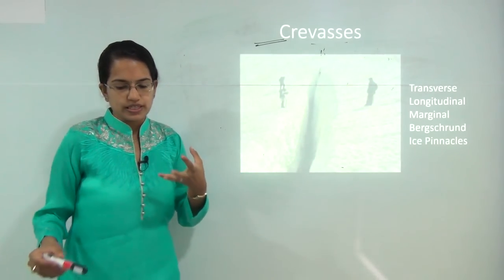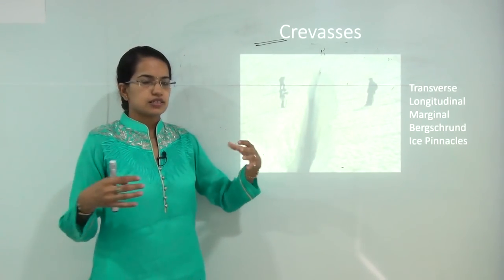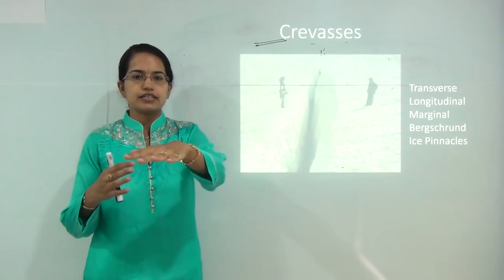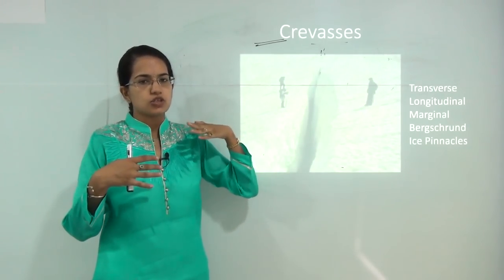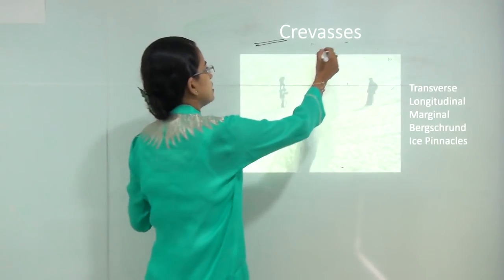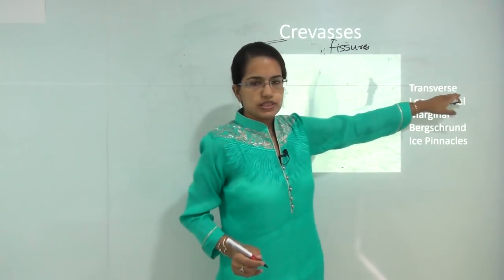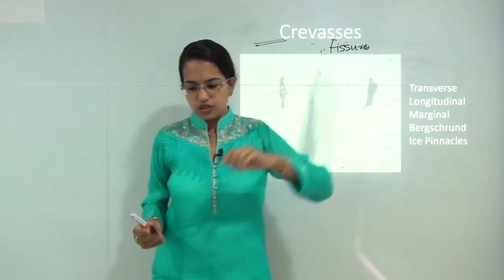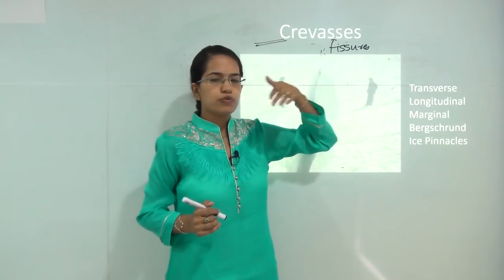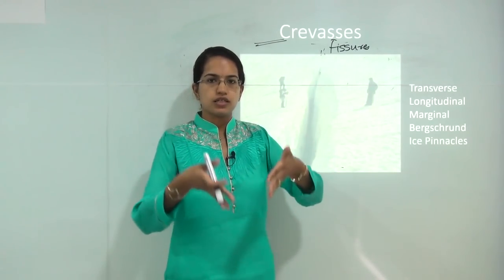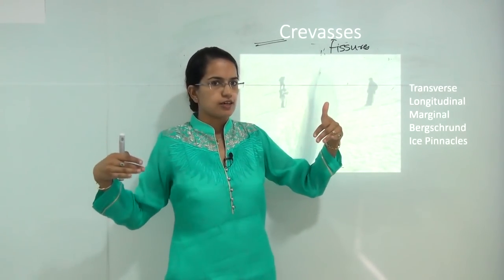The transverse crevasse occurs when the center part of the glacier is moving much faster than the surrounding region, creating cracks or fissures around the margins. Marginal crevasses are commonly seen as you move towards the downhill. When going downhill, the speed suddenly increases and there are fractures along the margins of the glacier.